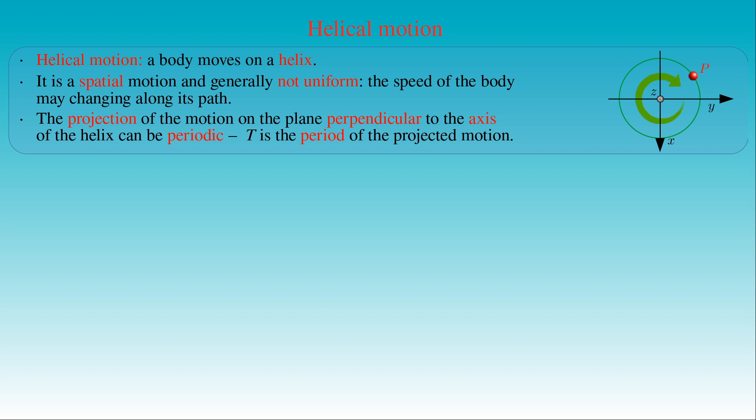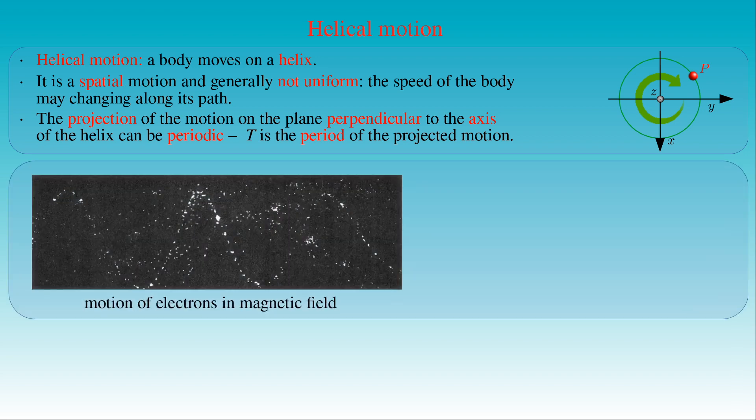Let us consider some examples for helical motion. The most famous example is the motion of the electron or any charged particle in a homogeneous magnetic field. The particle propagates along a helical path if its initial velocity is not parallel with the magnetic field lines. The trajectory of this motion can be recorded in a cloud chamber, where visible water droplets are induced to form around charged particles moving in the chamber, as seen in this photo. Here the speed of the particle is constant along the helix, and only the direction of its velocity changes.